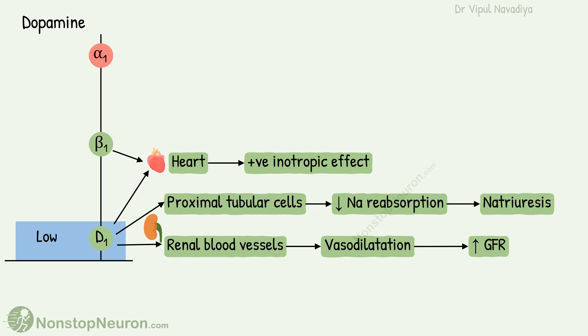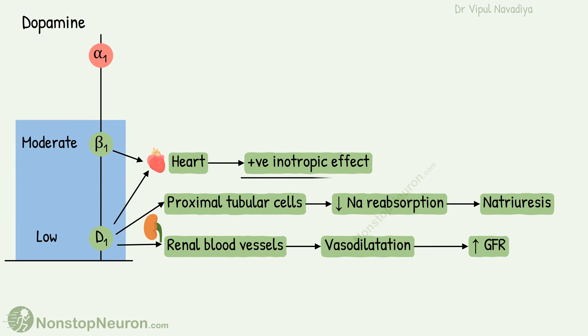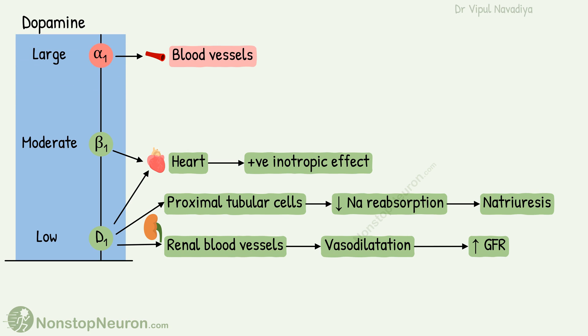Beta-1 receptors are found in the heart. They are stimulated at moderate doses of dopamine and contribute to the positive inotropic effect. Alpha-1 receptors are found in blood vessels; they are stimulated at higher doses and cause vasoconstriction. These are the dose-dependent actions of dopamine.